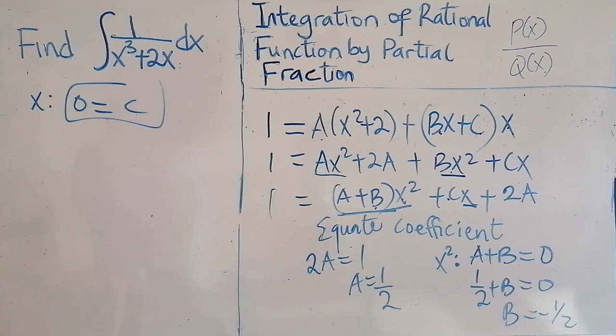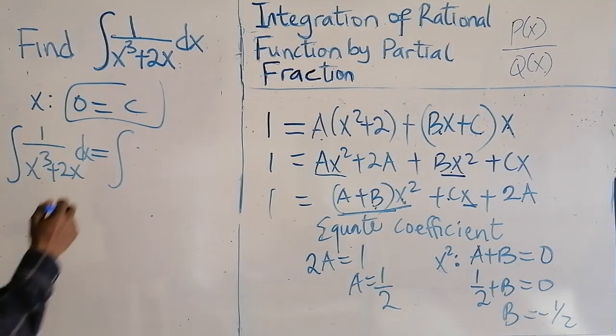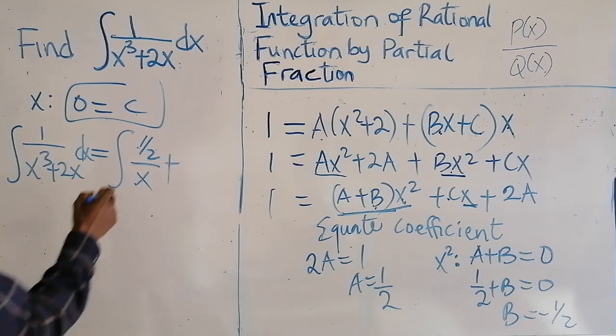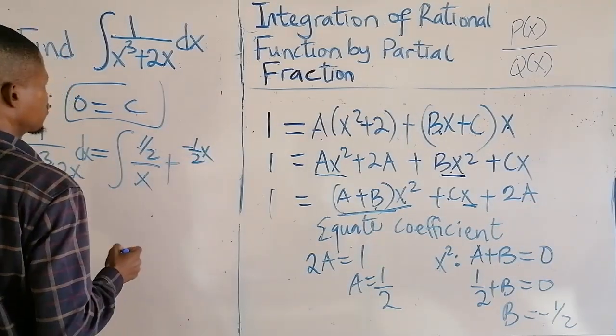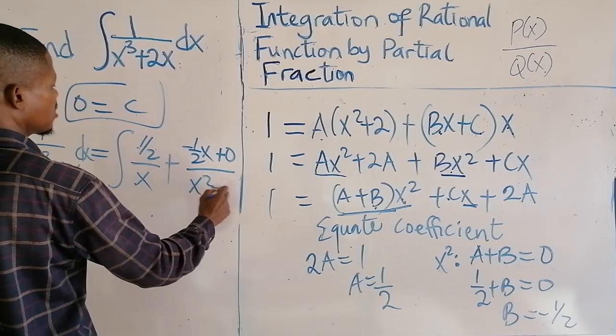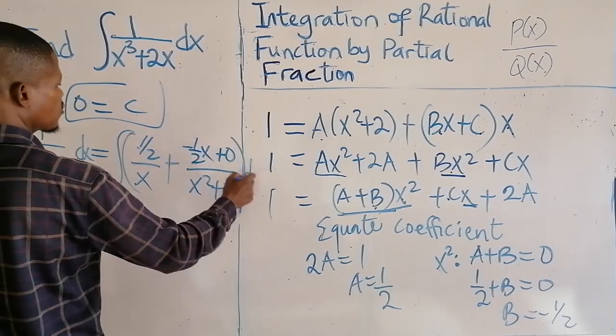What again we need? So we've gotten A, we've gotten B, we've gotten C. So we've gotten all the parameters. This equal to my A is 1 over 2 over X plus my B is minus half. Minus half X plus C. Plus C is zero. All over X squared plus 2 dX.